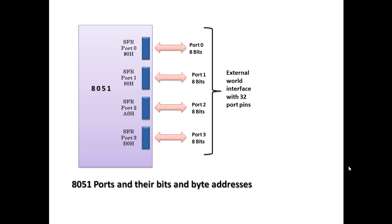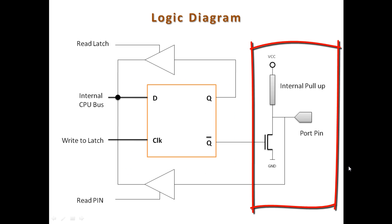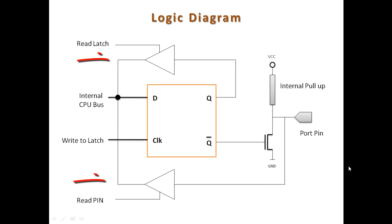Let us try to understand these ports in more detail by looking at the logic diagram. As you can see, the logic diagram has got three main components: the D-latch, the output buffer, and the two tri-state buffers. Port 1, port 2, and port 3 have this particular logic diagram.